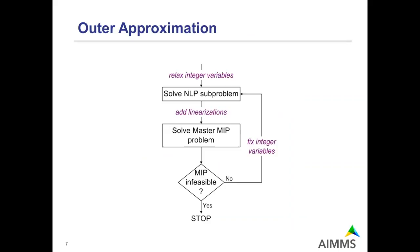The outer approximation algorithm is quite elegant yet simple. The algorithm starts by relaxing the integer variables, resulting in a nonlinear programming problem that is then solved. Then linearizations are added for all nonlinear constraints and the nonlinear objective if present. This results in an MIP combining the original linear constraints with the linearizations, which is then solved. If this MIP is infeasible, the algorithm stops; otherwise, the integer variables are fixed and the resulting NLP is solved, and the process repeats.